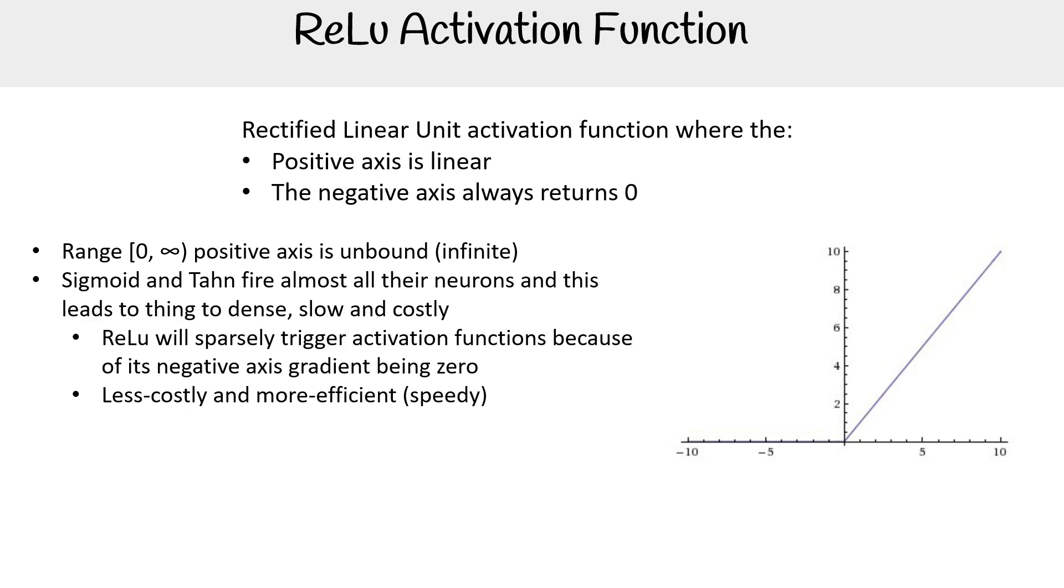So ReLU will sparsely trigger activation functions because of its negative axis gradient being zero. So if something is really low, it's going to be zero, it's not going to be a teeny tiny bit on. It's less costly but more efficient, so it's a lot faster.